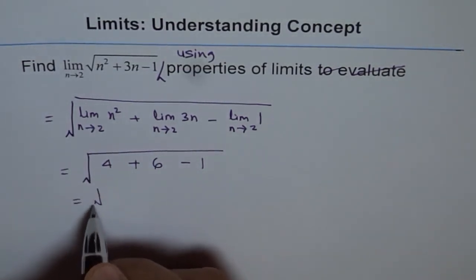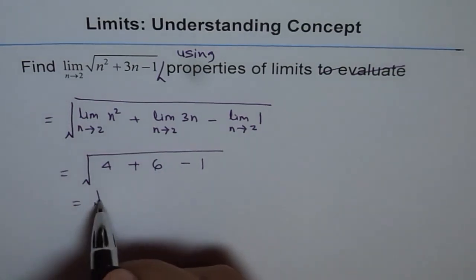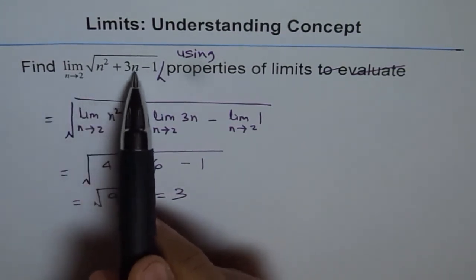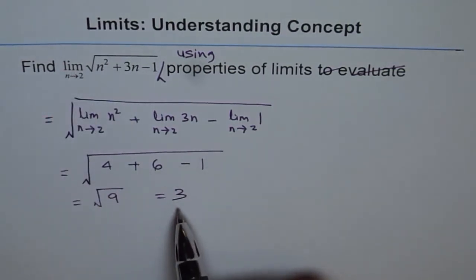And this equals square root of 4 plus 6 is 10, 10 minus 1 is 9, and square root of 9 is 3. Therefore, the limit of this function as n approaches 2 is 3.